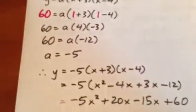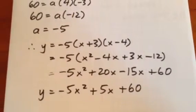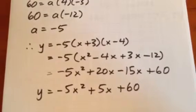We can then put the A value in where it belongs. So, y equals negative 5 times (x plus 3) times (x minus 4).